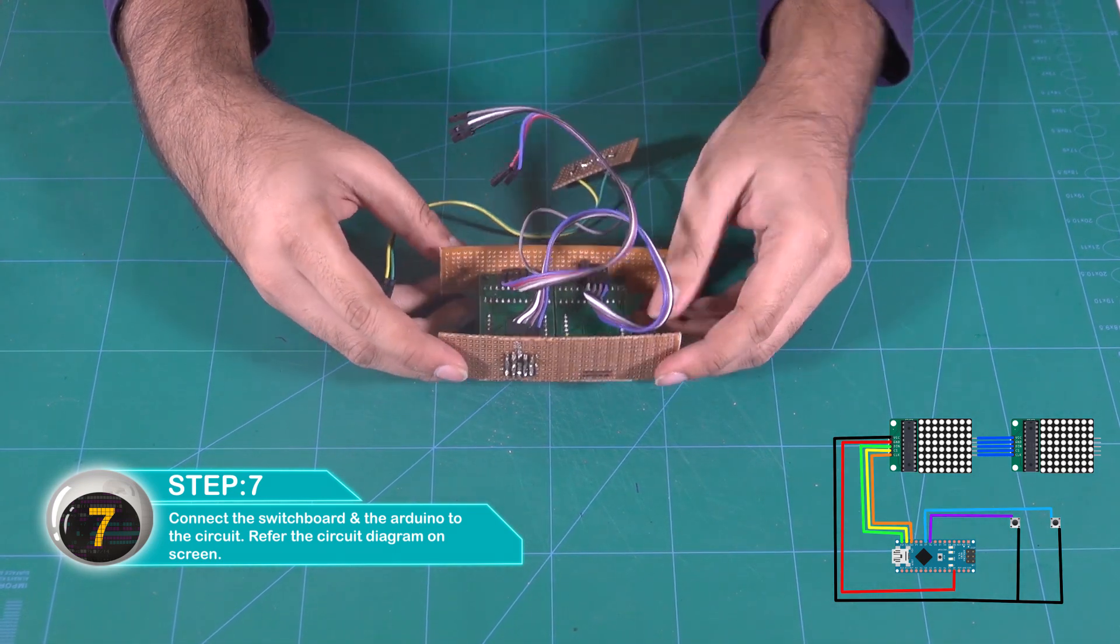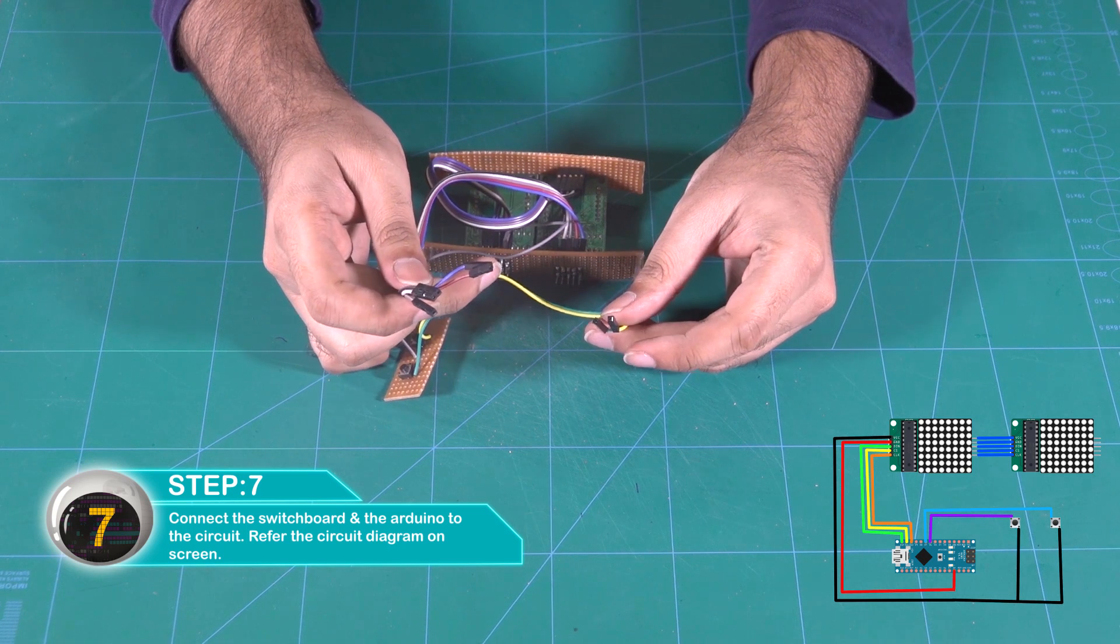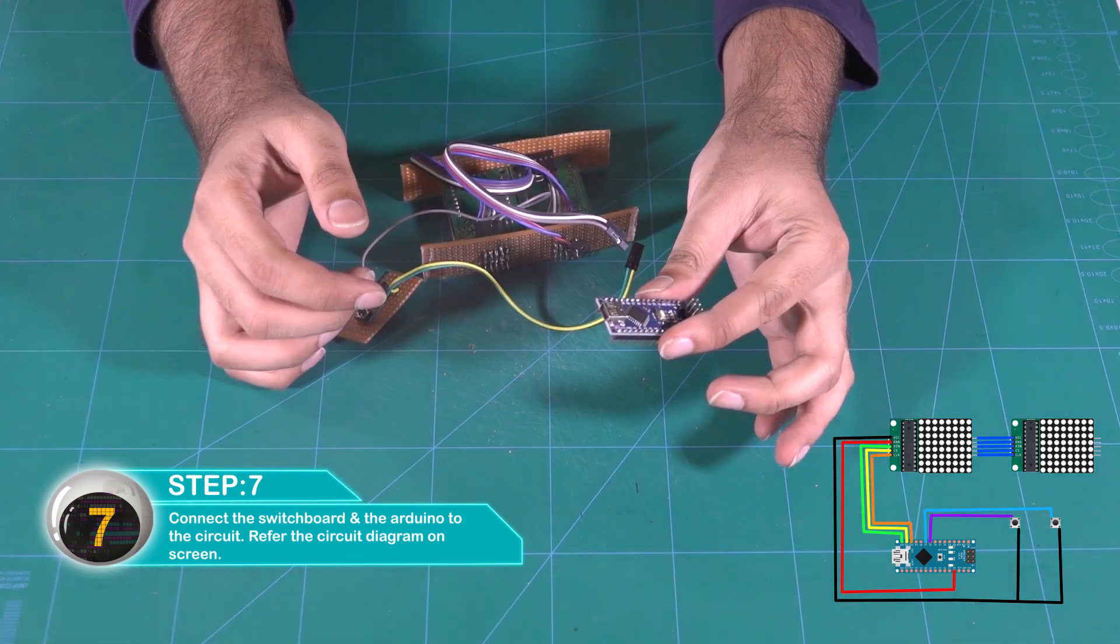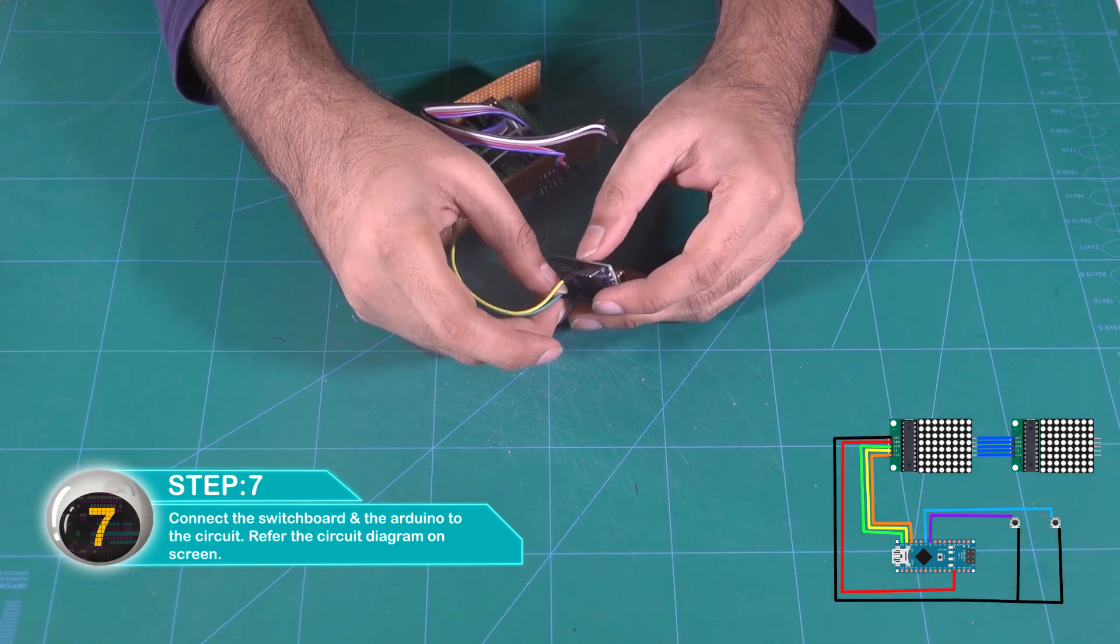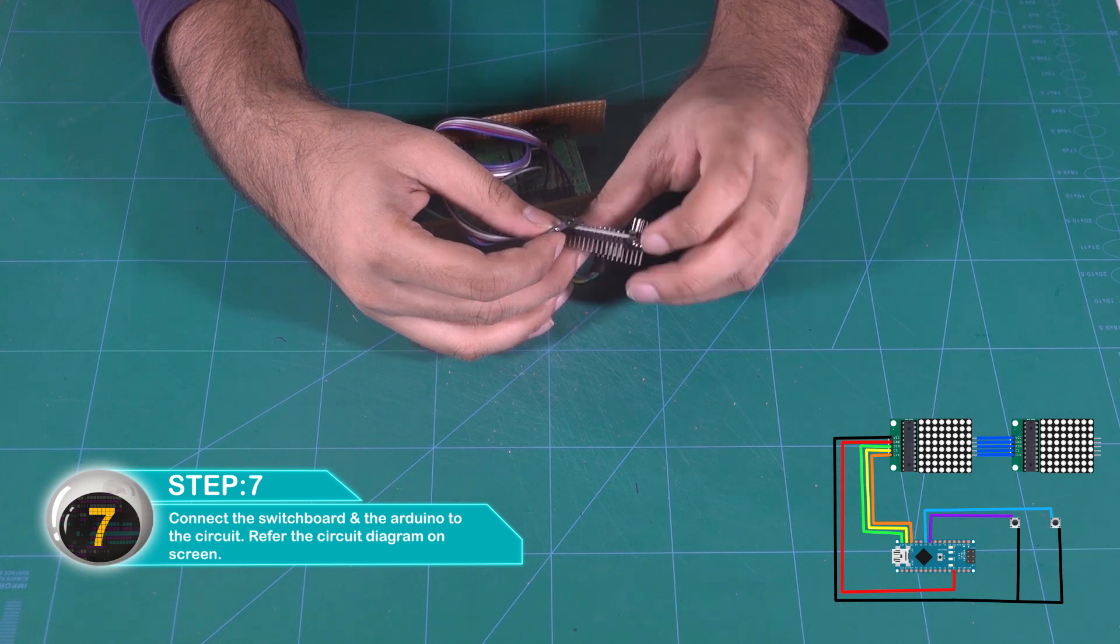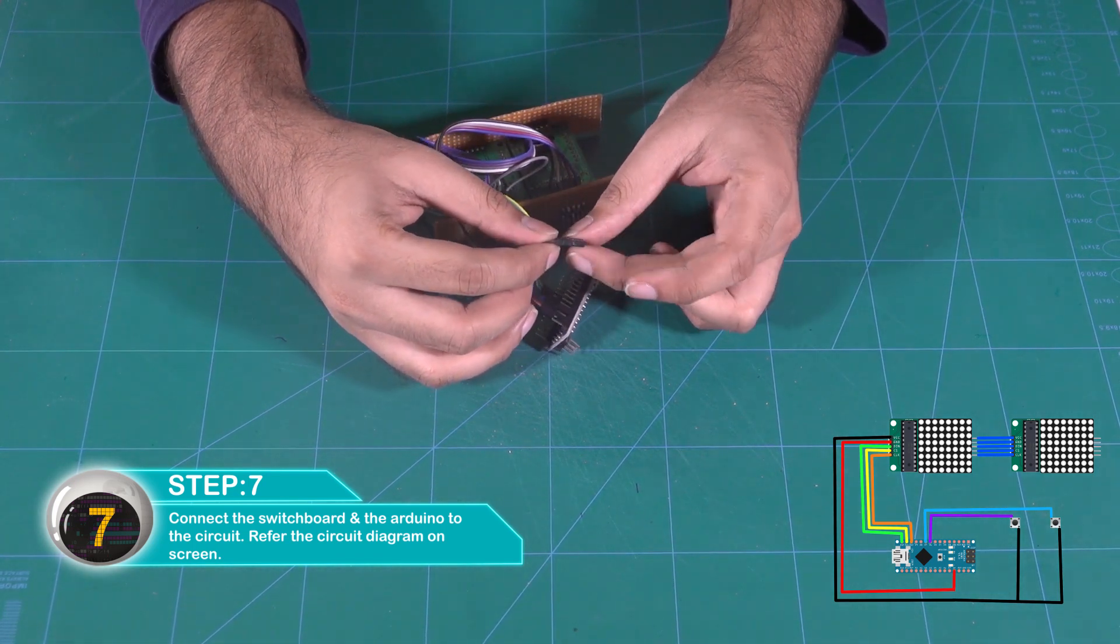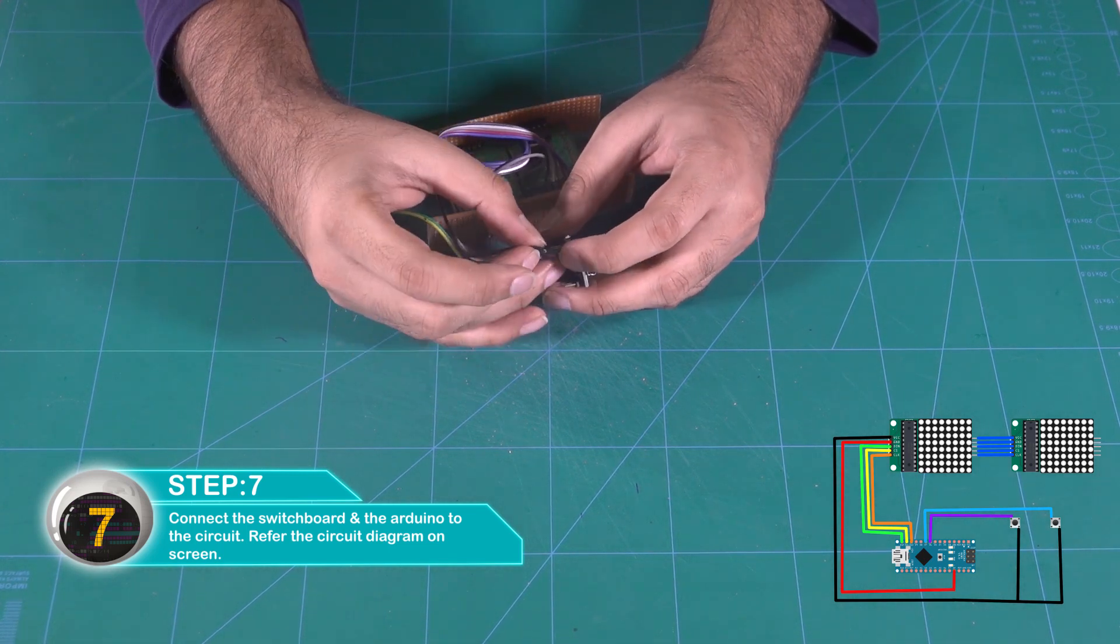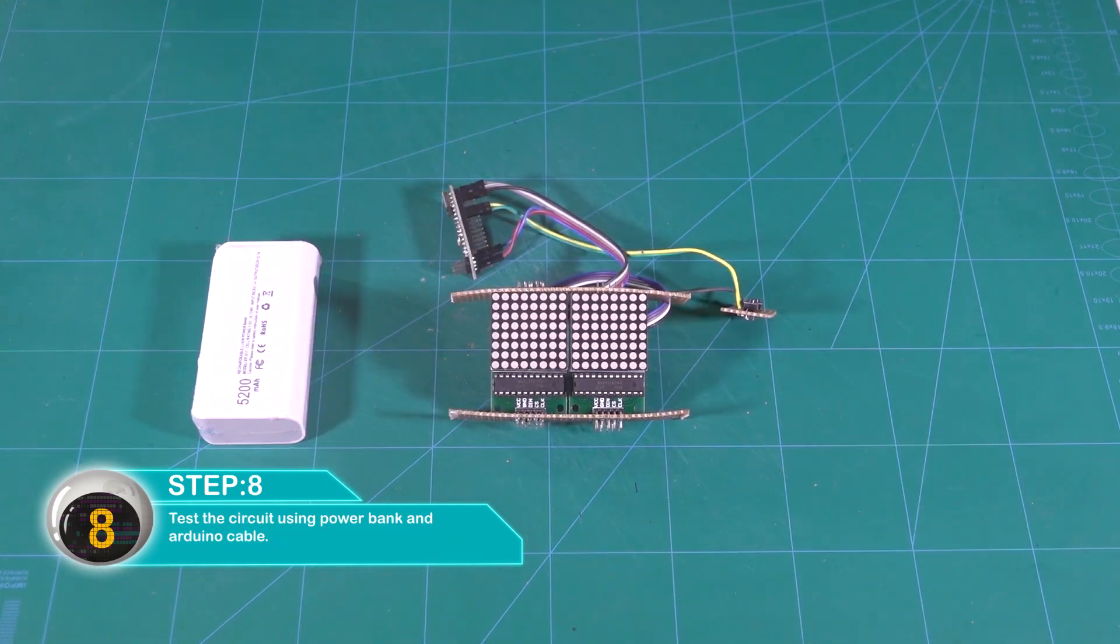Connect the switchboard and Arduino to the circuit. You can see the circuit diagram in the video. Let's do this. Test the circuit with a power bank.